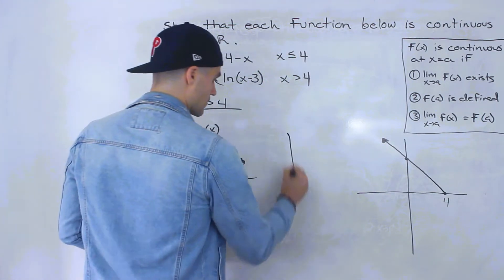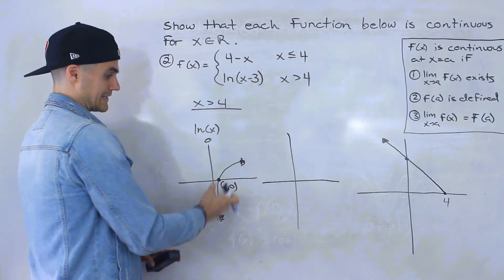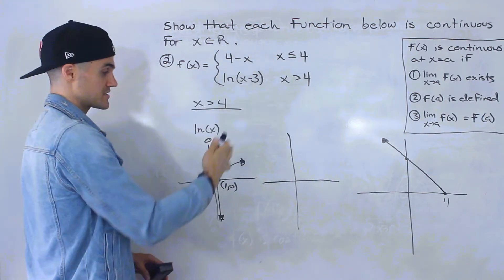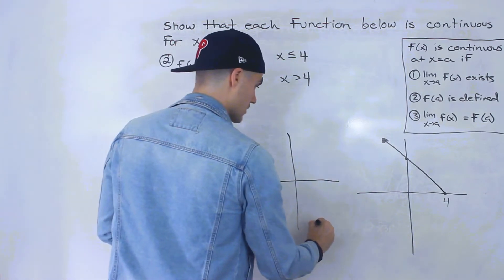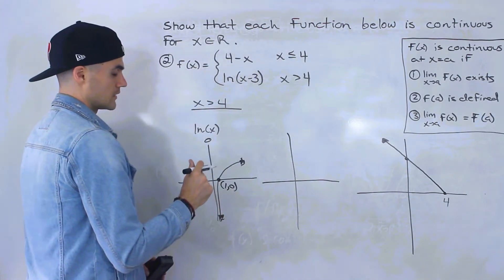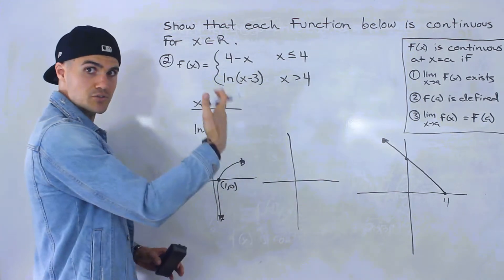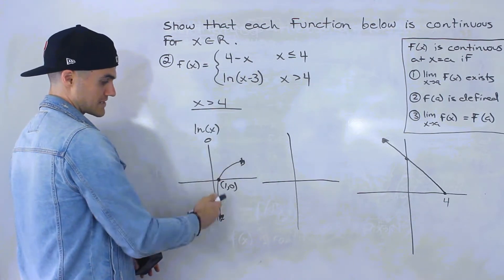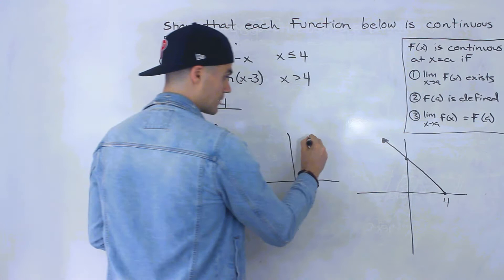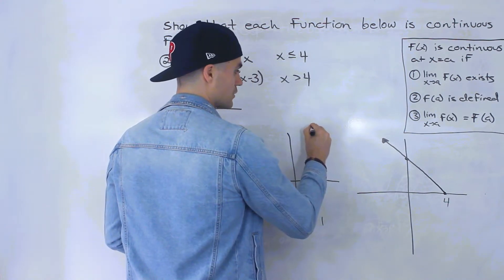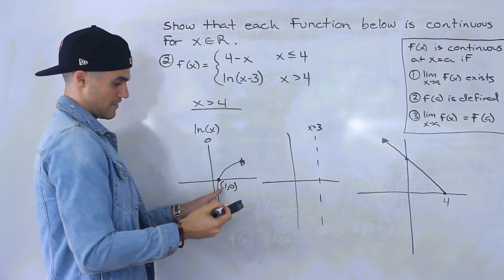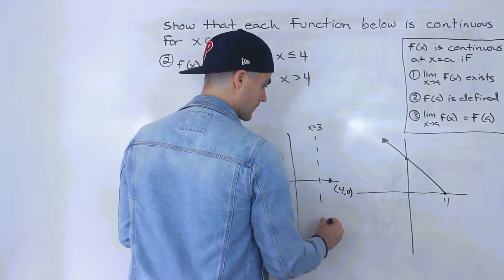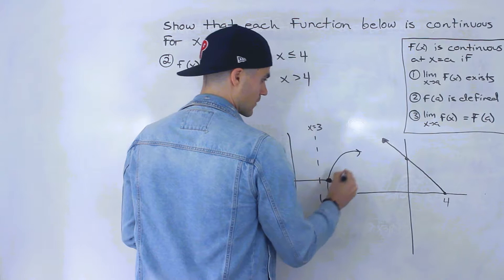ln of x minus 3 is basically the graph of ln of x shifted 3 to the right. The d value is positive 3, so the vertical asymptote shifts from x equals 0 to x equals 3. The x-intercept of 1 shifts to 4, giving us an x-intercept at 4 and 0.